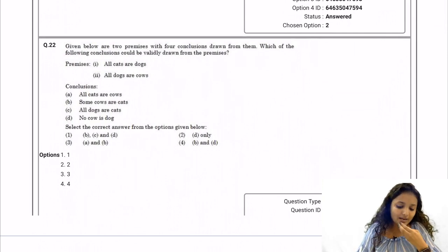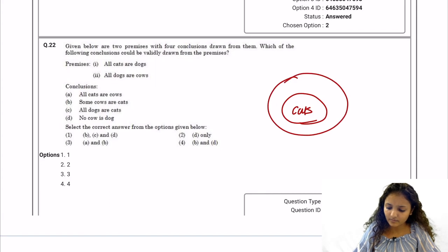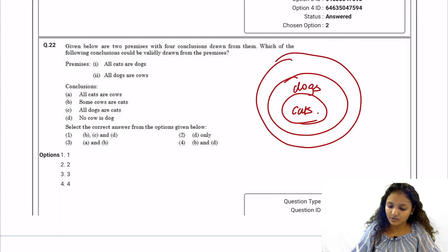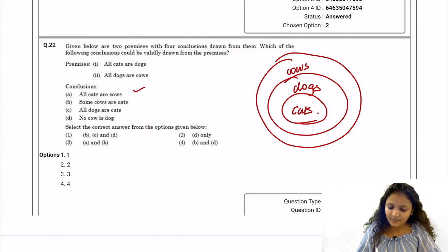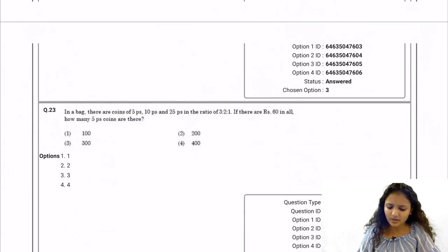Question 22: Two premises — all cats are dogs, and all dogs are cows. Using a Venn diagram: all cats are cows — yes; some cows are cats — yes; all dogs are cats — no; no cow is a dog — no. So only conclusions A and B are true. Option number three is correct.